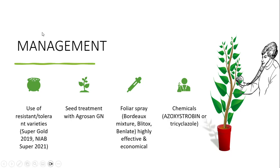To manage this disease, use resistant or tolerant varieties like Super Gold and NIOB Super. Seed treatment with Agrosan, foliar spray with Bordeaux mixture, Glitox, and Benlate are highly effective and economical fungicide sprays against rice blast. Other chemicals such as Azoxystrobin and Tricyclazole can also be used. That was all about rice blast — thank you very much.